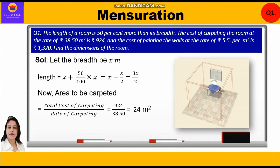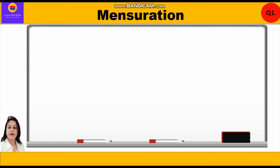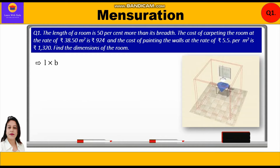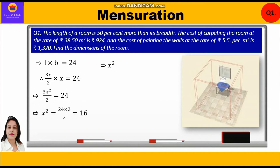Area to be carpeted is 24 meters square. This is the area of the floor, which equals length into breadth. So: (3x/2) × x = 24, giving 3x²/2 = 24, therefore x² = 24 × 2/3 = 16.